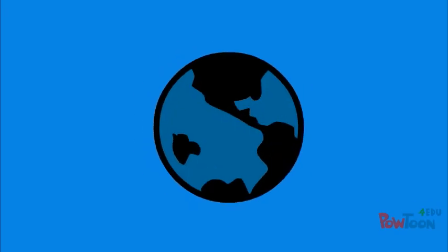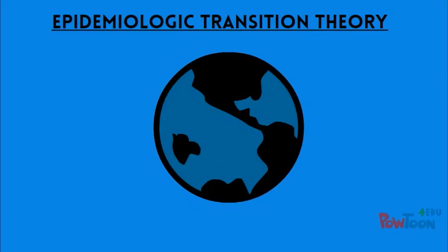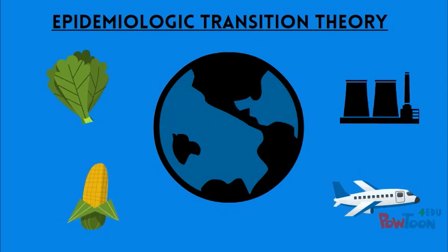The advent of agriculture has brought about many changes to human population dynamics. This is represented through the epidemiologic transition model created by Abdel Omran in his 1971 publication and expanded upon by Barrett and colleagues in 1998. This model continues to be developed by contemporary researchers.